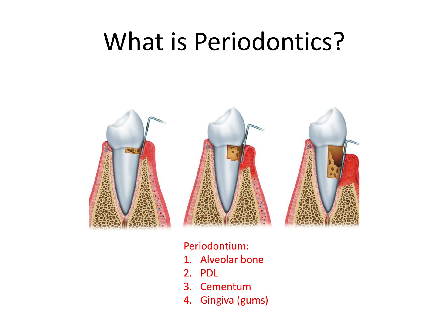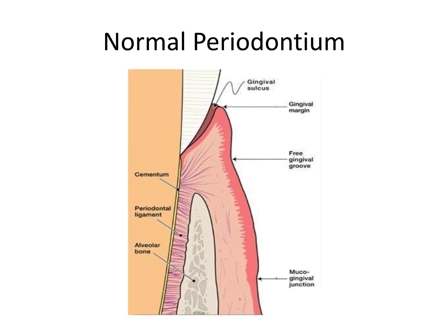Before we can talk about disease, let's talk about healthy normal tissue. This is an excellent diagram that we can study from. You can notice right off the bat we have our four components of the periodontium: the alveolar bone, the cementum, the periodontal ligament, which is between the cementum and the alveolar bone, and the gingiva. Let's start by talking about the gingival sulcus, sometimes also called the gingival crevice. It's the natural space between the tooth and the gingiva that surrounds the tooth. Everybody has a sulcus between their teeth and their gums, but when it's pathologically deepened, it's called a periodontal pocket.